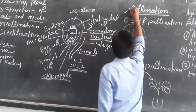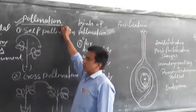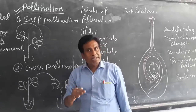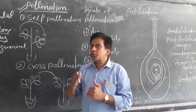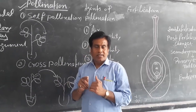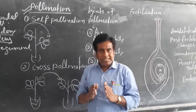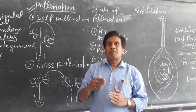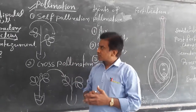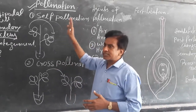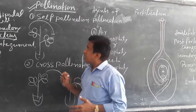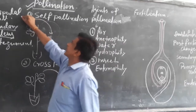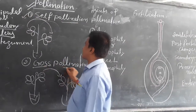My second subtopic is pollination. Pollination is a process in which pollen grains transfer from anther to a stigma. This is an important phenomenon in the sexual reproduction of flowering plants. There are two types of pollination: one is self-pollination and the other is cross-pollination.